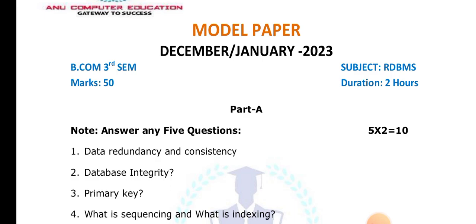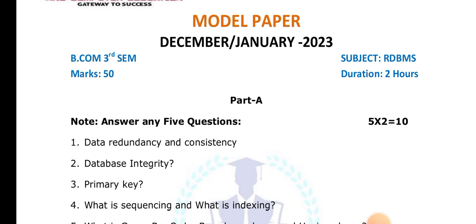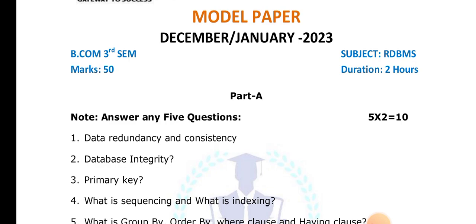What is a primary key? A primary key is an attribute or a set of attributes by which we can uniquely identify each row of a table. If the primary key is not there, we cannot differentiate one record from another.